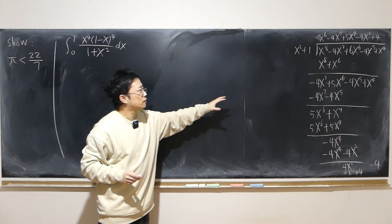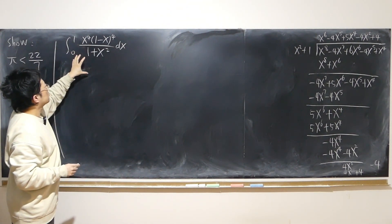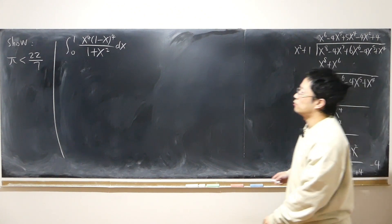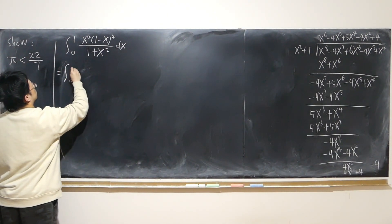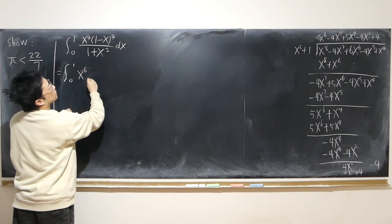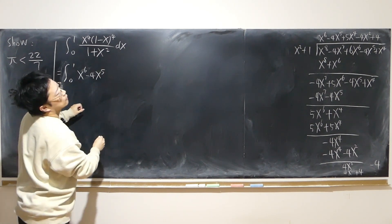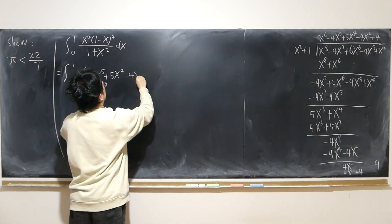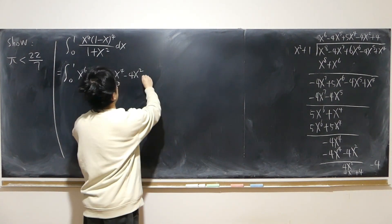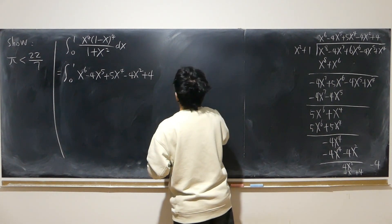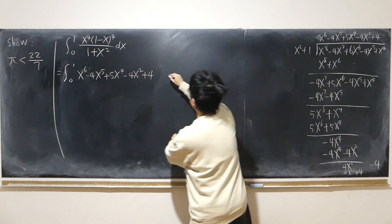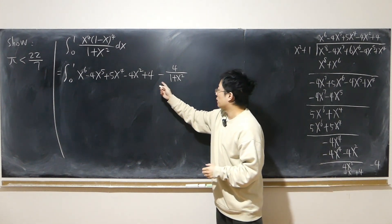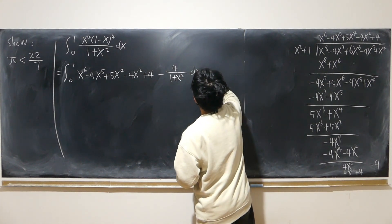So if my calculation is correct, I can turn this improper rational function into a polynomial plus a proper rational function. That gives me the integral from 0 to 1 of: the polynomial x^6 minus 4x^5 plus 5x^4 minus 4x^2 plus 4, minus 4 over (1 plus x²) dx.